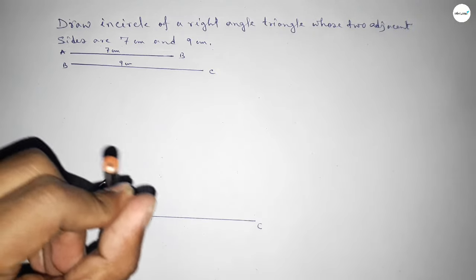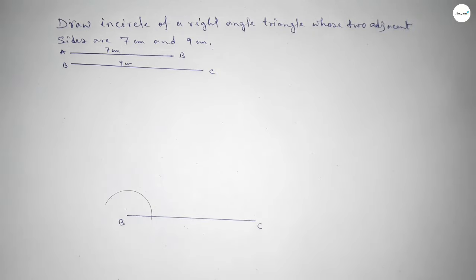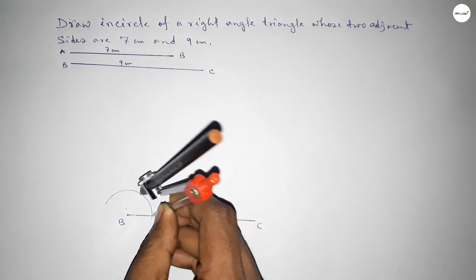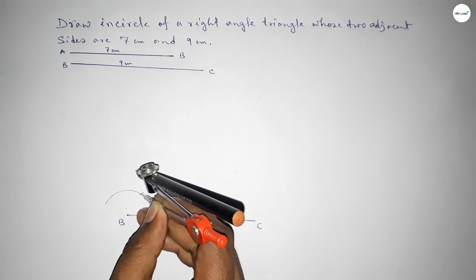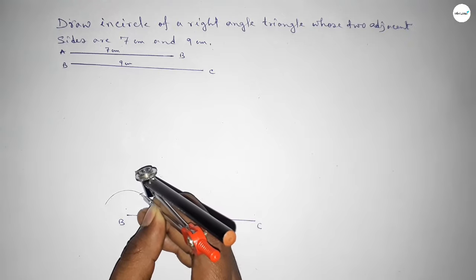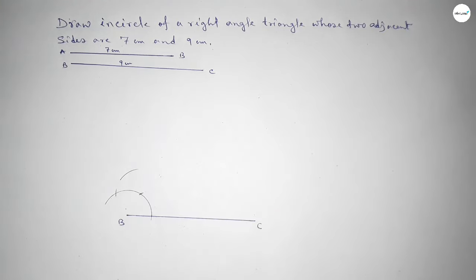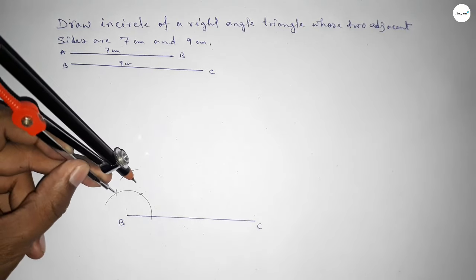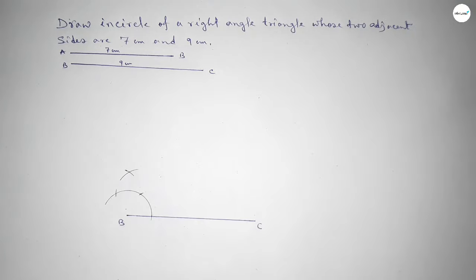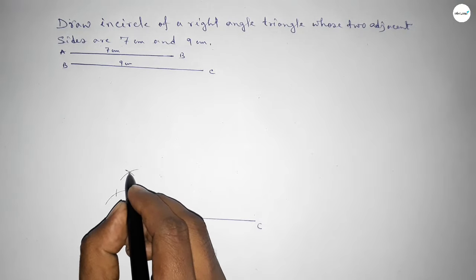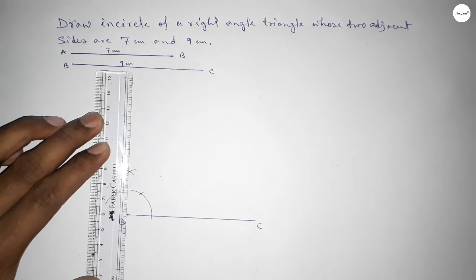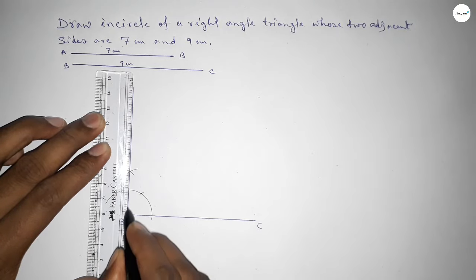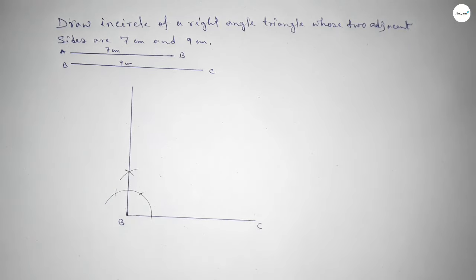Next we have to draw a 90 degree angle on the point B. Taking any length and drawing an arc, then with the same length placing the compass and cutting arcs at multiple points until both curves intersect at a point. Joining this to get a 90 degree angle.